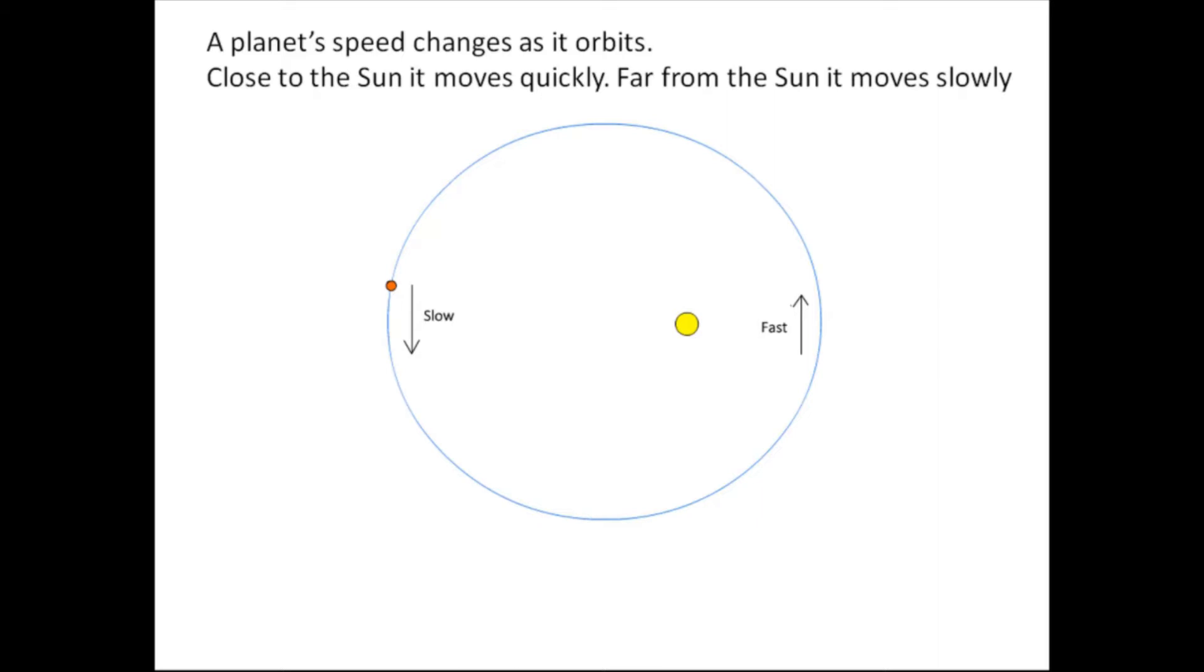Planets which are furthest away from the sun orbit slower. Planets which are closer to the sun orbit quicker. So when any particular planet is orbiting the sun in its ellipse, its speed changes depending on how far away from the sun it is.